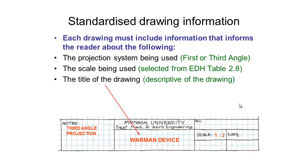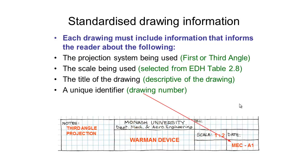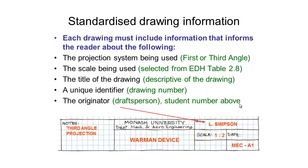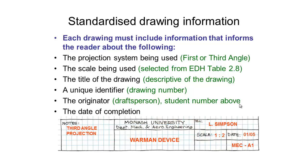In our title block we should also include a title for our drawing and a unique identifying drawing number. You should also include your name — or the name of the person who produced the drawing — and in your case also include your student number in this box. Always include the date you completed the drawing, and if applicable you might also include the name of the person who checked your drawing.